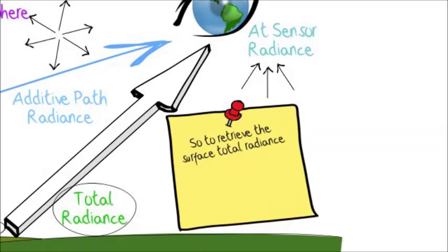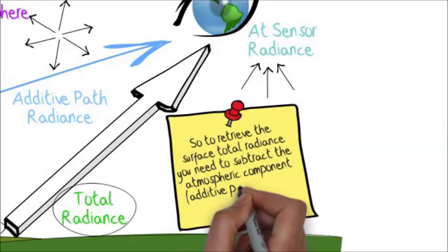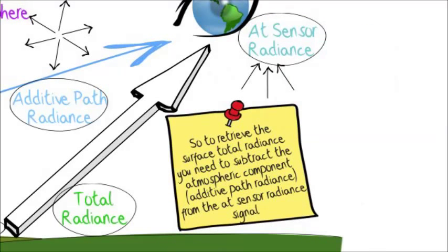But if we're in the field, we would be measuring total radiance or at surface radiance. Therefore, we need to reconcile the two of those to make field and image measurements more comparable. So, to retrieve the surface radiance from the satellite sensor, we need to subtract the atmospheric component.